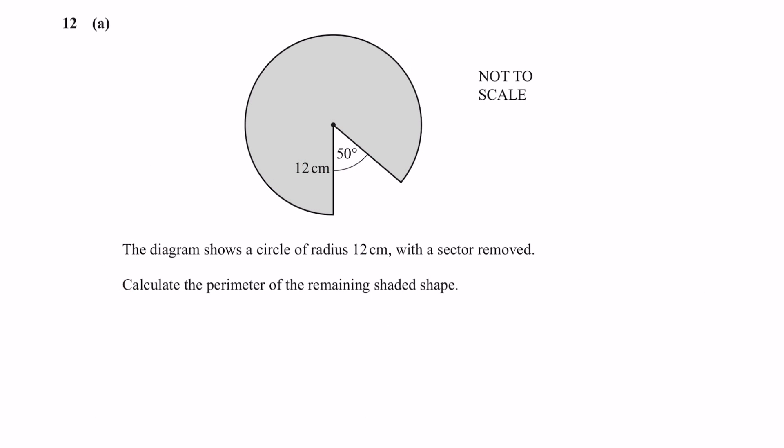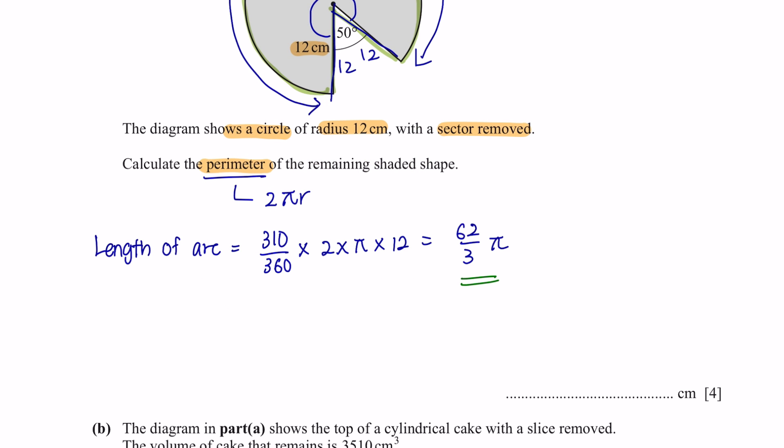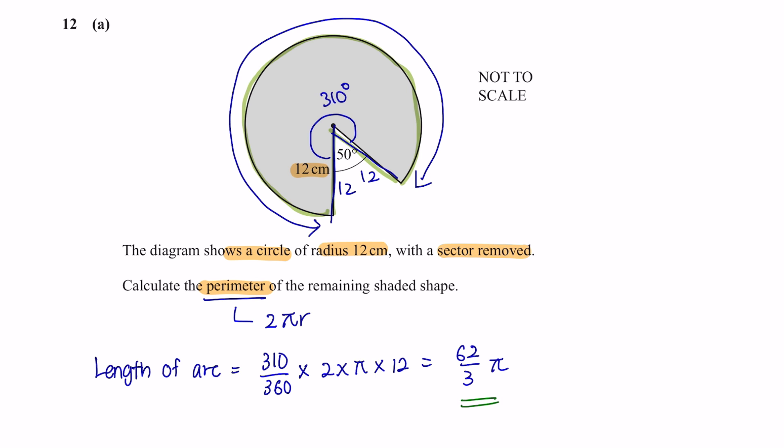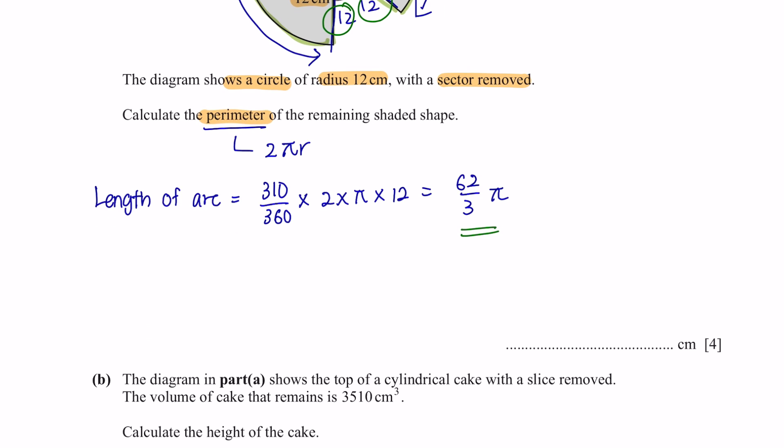The final question, 12a. The diagram shows a circle of radius 12 cm with a sector removed. Calculate the perimeter of the remaining shaded shape. So to calculate the perimeter, we are going to look for the outline of the shape. We know that this side is 12 and this side is also 12. So now we have to find out the length of this sector. The formula for the perimeter of a circle is 2πr. But since this is not a complete circle, we are going to multiply it with the shaded sector. After we have obtained the length of arc, we can add it with both sides over here. So the perimeter of the entire shape is 88.9 cm.